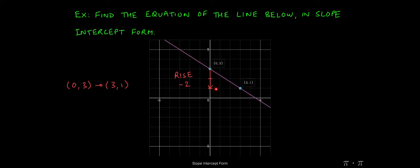From this point, we need to move 3 units to the right. That indicates that the run will be 3 units. So slope being rise over run, we can see that m turns out to be negative 2 over 3.